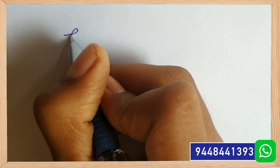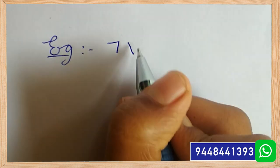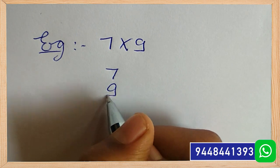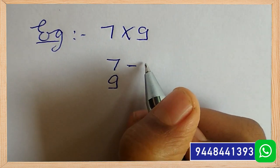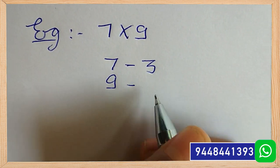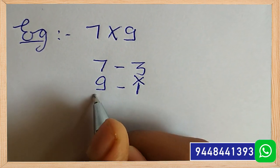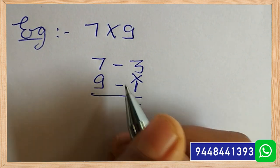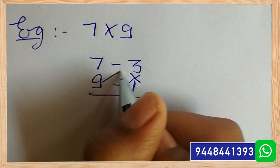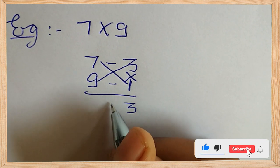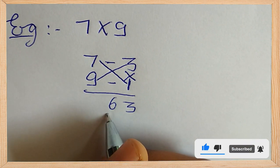Final example: 7 into 9. First, take the difference of two digits with 10. Here, 10 minus 7 is 3 and 10 minus 9 is 1. Multiply 3 into 1, that is 3. Now, either take 9 minus 3 or 7 minus 1 — both answers are 6. So the total answer is 63. Let's try with two-digit numbers.